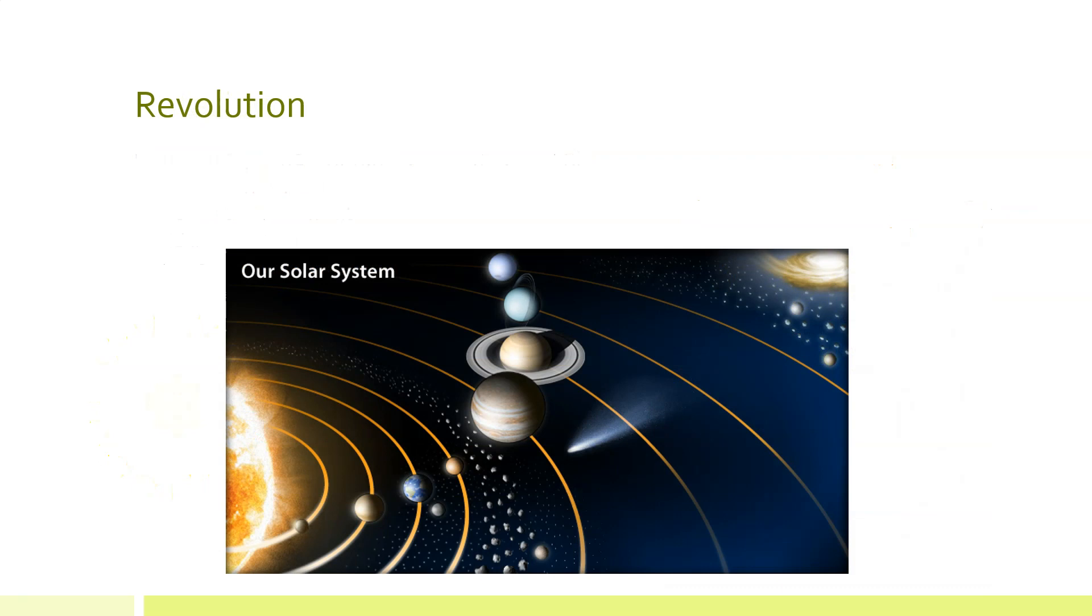In addition to rotating, Earth travels around the sun. Revolution is the movement of one object around another. Earth revolves around the sun. The other planets in the solar system also revolve around the sun. Many planets, such as ours, have one or more moons that revolve around them too.